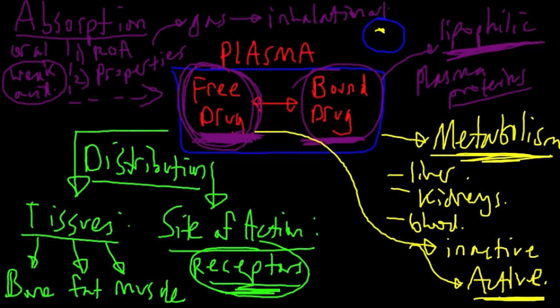For example, that would be prednisolone to prednisolone, which are corticosteroids. Typically, your liver is your main organ there, and your liver can break things down using mixed-function oxidases or your cytochrome P450 enzyme system, which we'll discuss in great detail later.